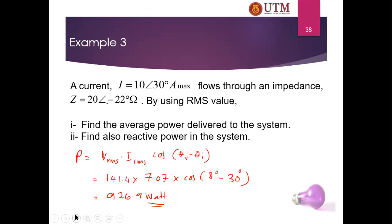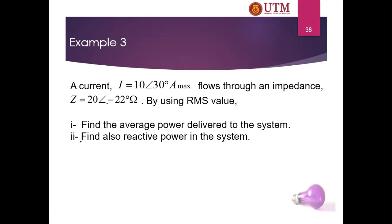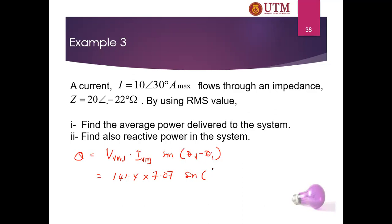For the reactive power Q: Q = V_rms × I_rms × sin(θ_v − θ_i) = 141.4 × 7.07 × sin(−22°), giving approximately −374.55 VAR. The negative value indicates that the circuit contains a capacitor.